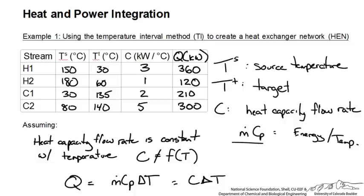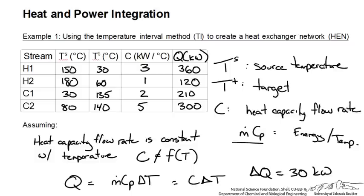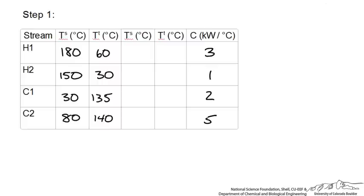The cold load adds up to 510 kW and the hot load adds up to 480 kW, giving a difference of 30 kW that we will have to account for later. Note that this is not the minimum energy requirement we are looking for, because we have not yet designated a minimum approach temperature for our heat exchangers. The first step in the temperature interval method is to designate this minimum approach temperature, and a good starting point is 10 degrees Celsius.